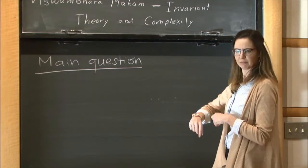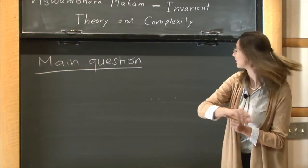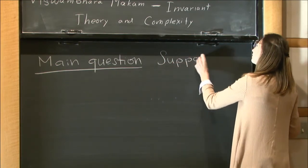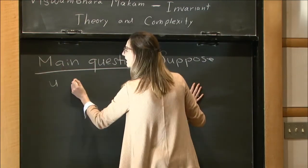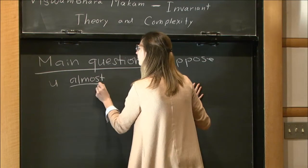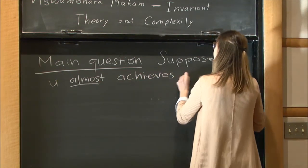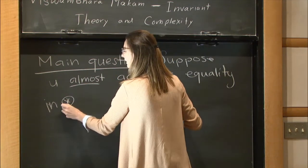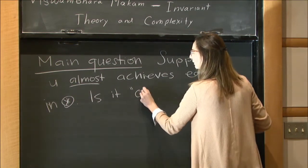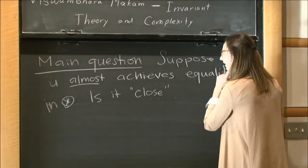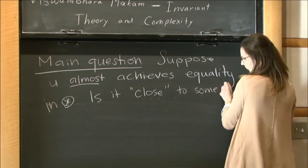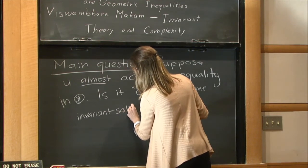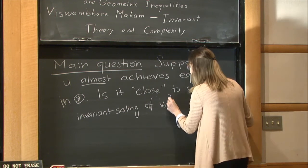So let me just say, extremely briefly, the main question that I'm interested in is the following. Suppose some function u, which is smooth and vanishes at infinity, almost achieves equality in the inequality. Then is it close—let me put this in quotes because it's not entirely clear how one wants to quantify this—to some invariant scaling of v0?